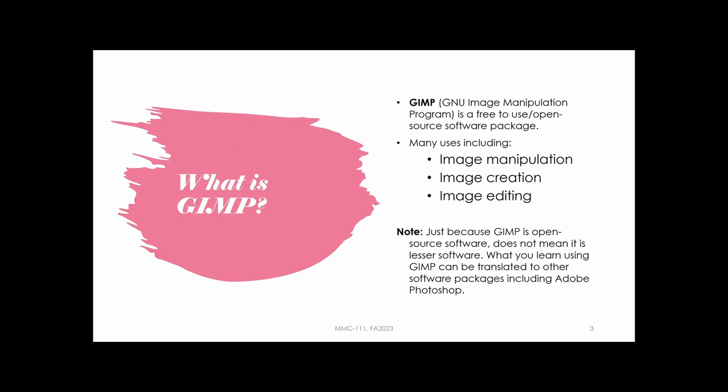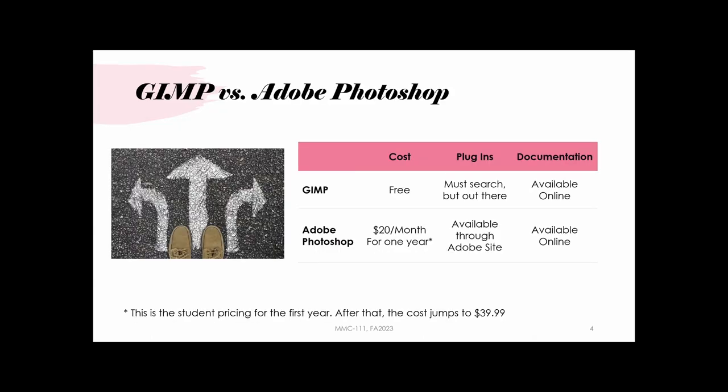GIMP has many uses: you can do image manipulation, create images, and edit images — just like you can in Photoshop. For web design and multimedia design, there are normally three things we look at when evaluating software: cost, plugins, and documentation.